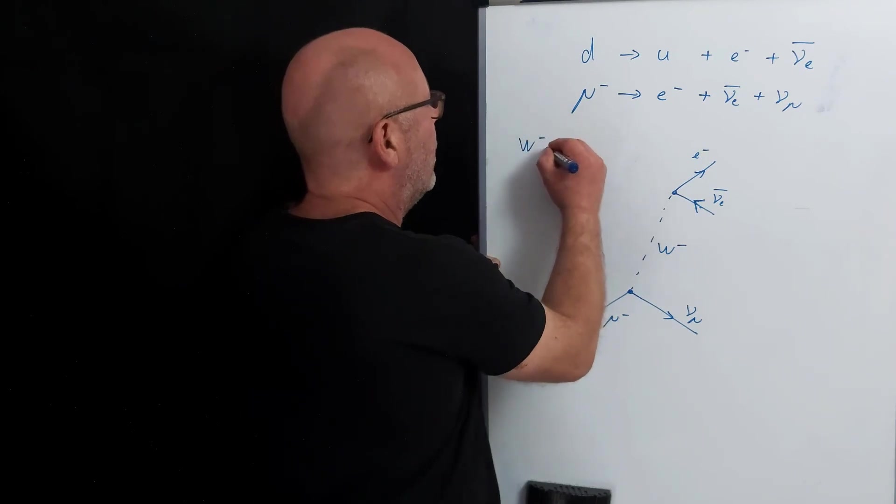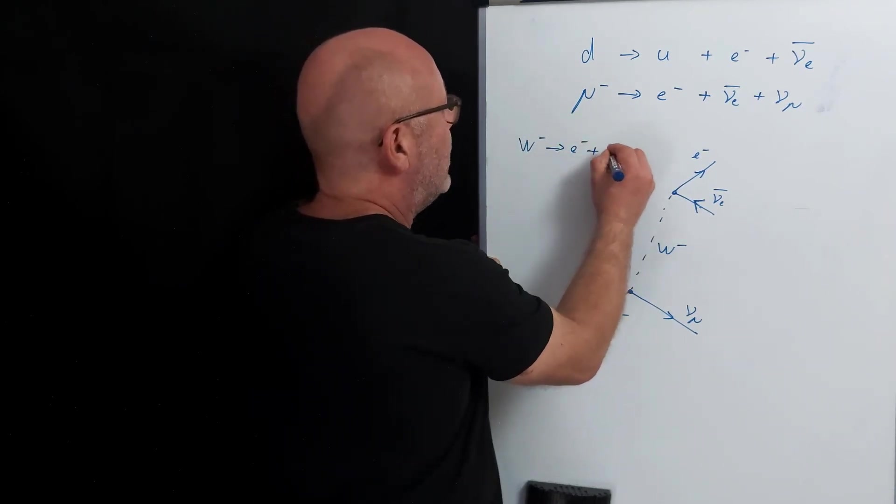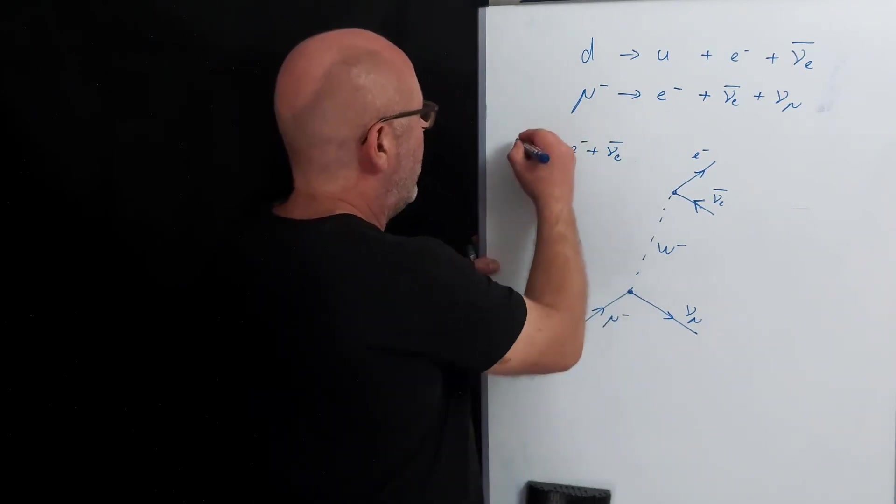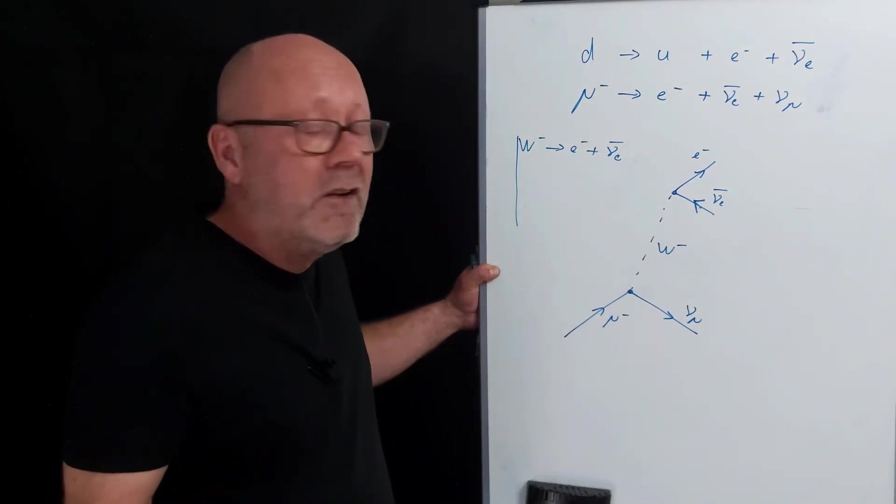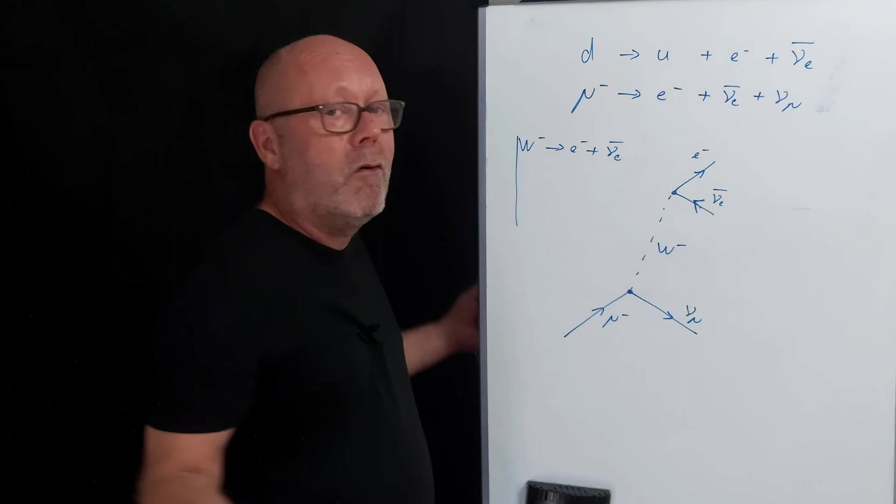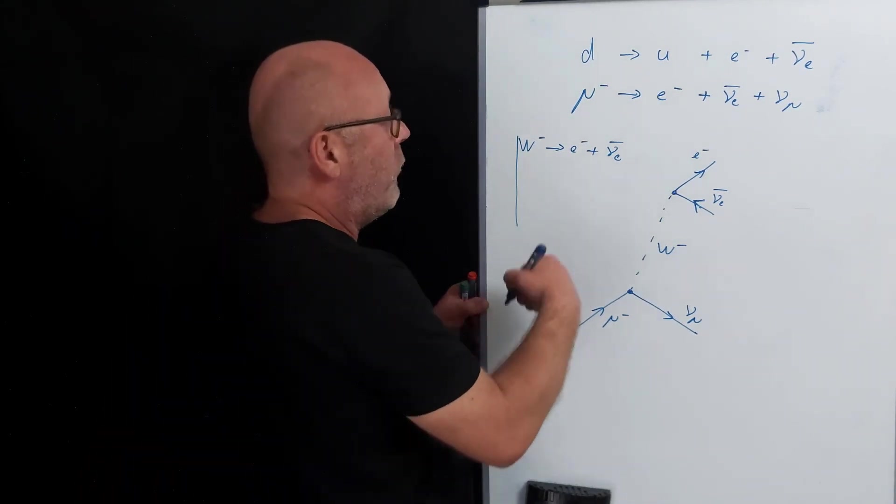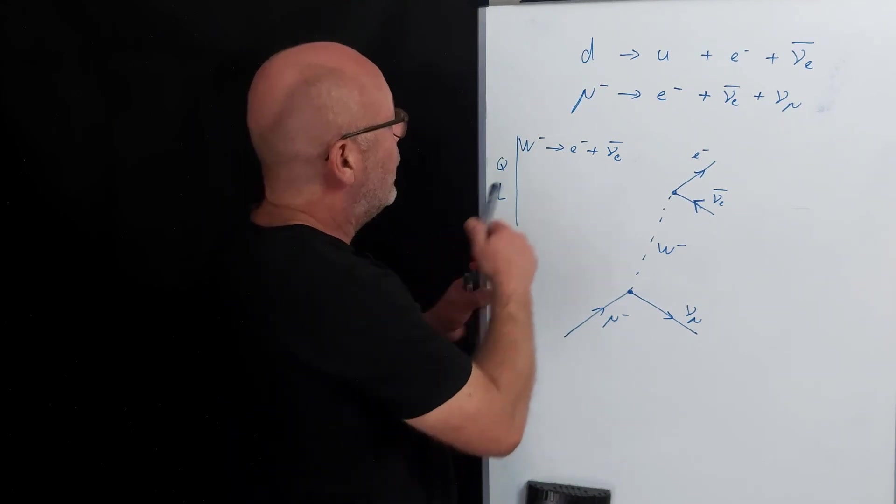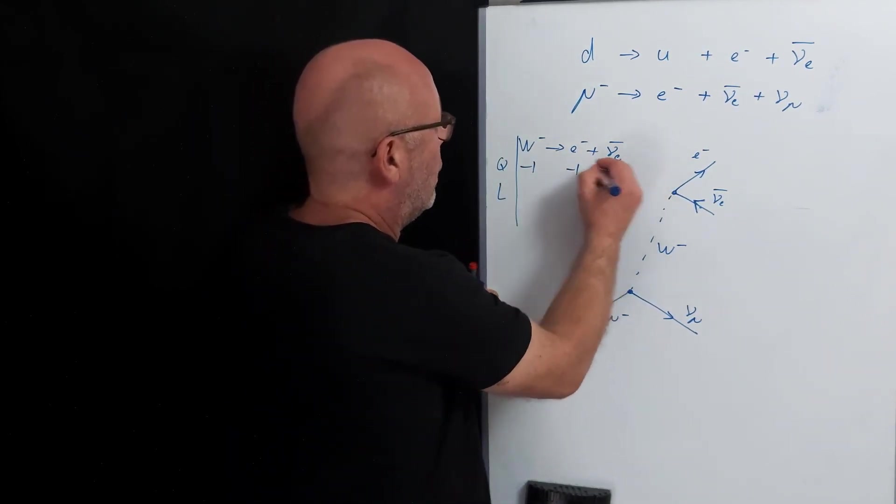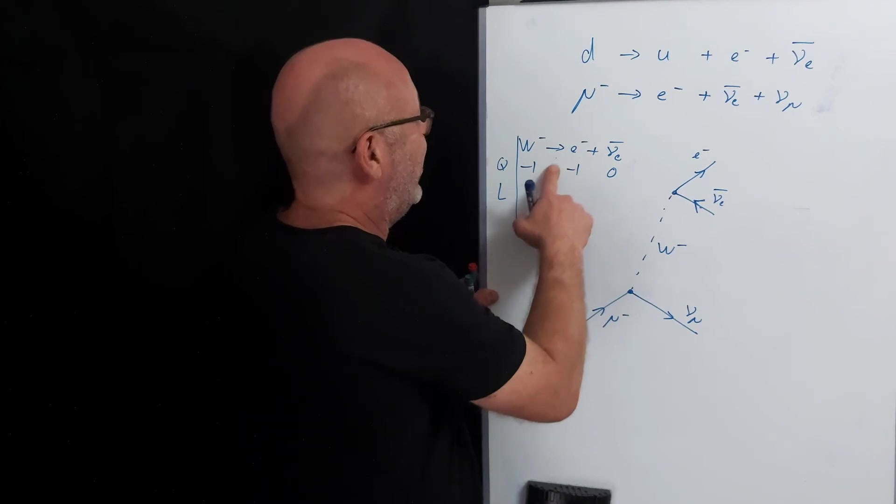So we've got the W- gives you an electron plus the anti-neutrino of the electron. And I can list the numbers. I'm going to skip the baryon number and the strangeness, because there's no quarks involved, so it's going to be zero for both of them. So let's do just the charge and the lepton number. Charge, minus 1, minus 1, zero. Check.